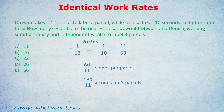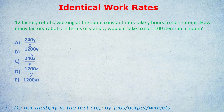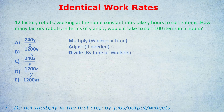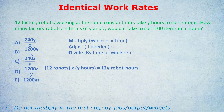The final question will be an identical work rate question, and it's the hardest of the lot — a 170-level GRE or GMAT 750-level question. Here it is: 12 factory robots working at the same constant rate take Y hours to sort Z items. How many factory robots, in terms of Y and Z, would it take to sort 100 items in 5 hours? Notice it says 'same' rather than 'identical,' but it still signals an identical work rate question. We follow the MAD method. Workers are robots: 12 workers times Y hours gives 12Y robot hours — for Z items.